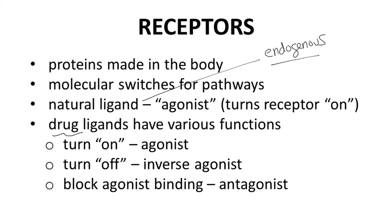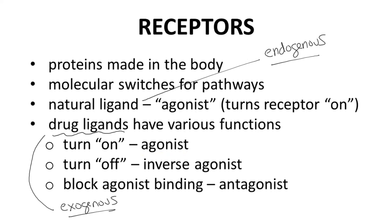Drug ligands, which tend to be unnatural to the body — exogenous — can have many functions. Drug ligands that turn a receptor on are called agonists. Drugs that turn off the receptor are called inverse agonists. Drugs that do nothing except block the agonist binding are called antagonists.